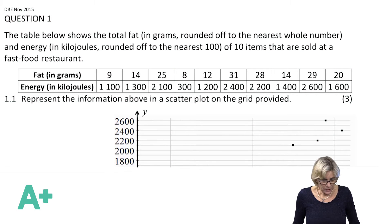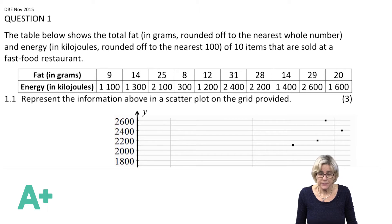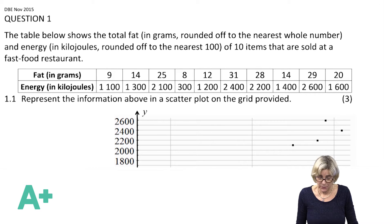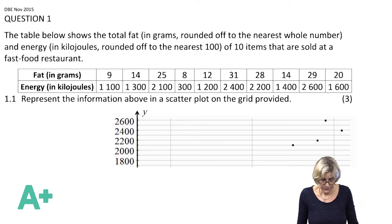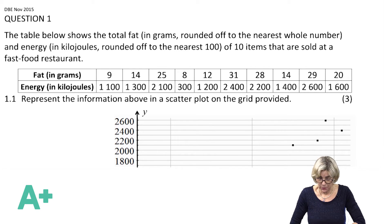Reading the question: the table below shows the total fat in grams rounded off to the nearest whole number, and energy in kilojoules rounded off to the nearest hundred, of 10 items that are sold at a fast food restaurant. So they give us the table — represent the information above in a scatterplot on the grid provided.